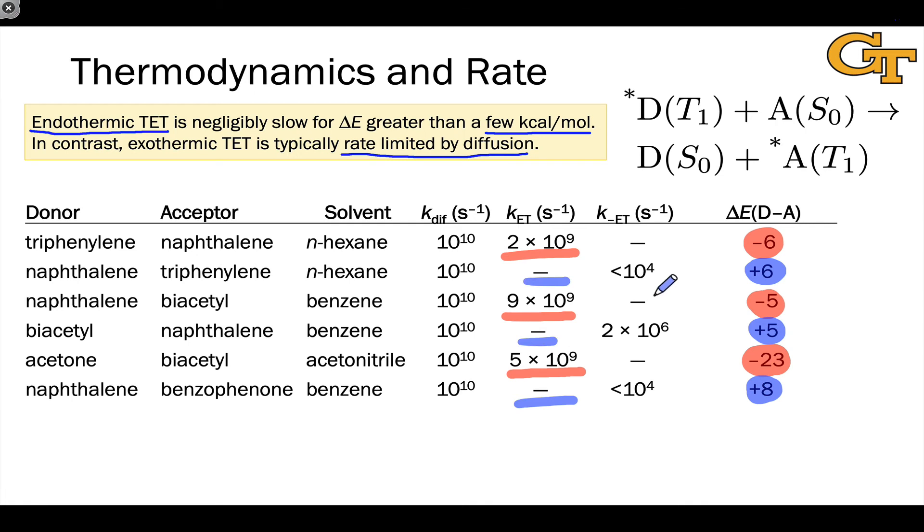And even if we look at the rate of reverse energy transfer, it remains relatively slow. And so we can measure, for example, the rate of back energy transfer, essentially the rate happening in the opposite direction, and this remains slow for cases of endothermic energy transfer, suggesting that we get very little energy transfer in the forward direction at any given time.